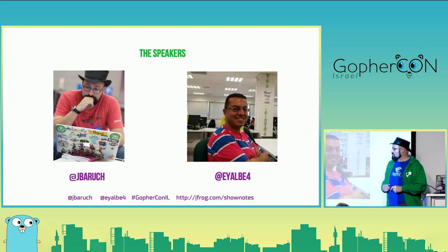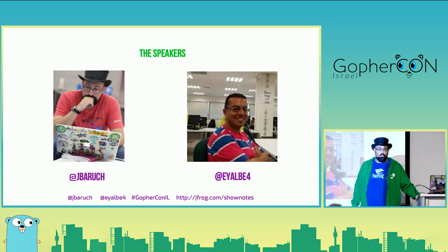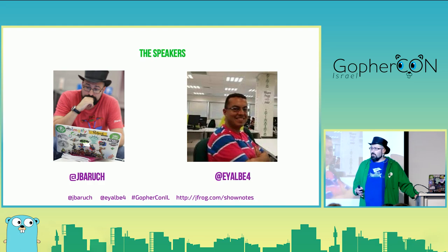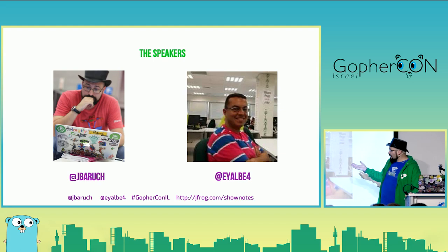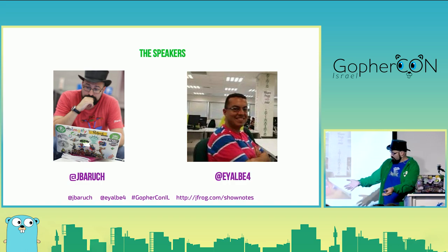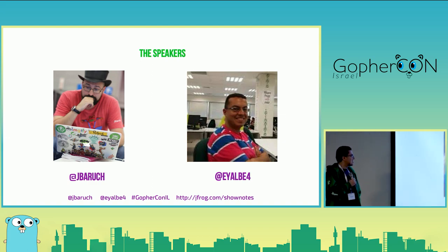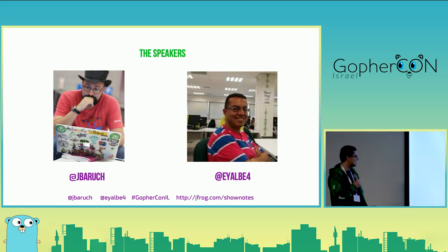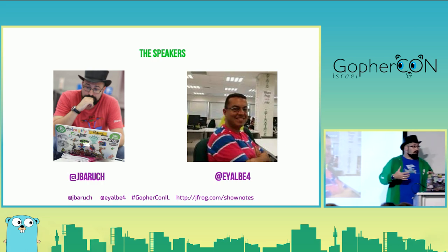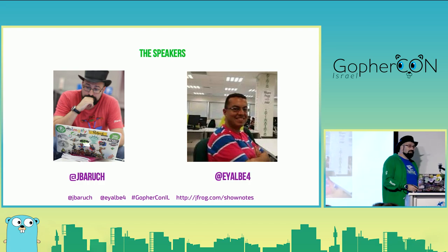Let's introduce the speakers. Yal Ben Moshe is the lead of our ecosystem team, which does a lot of work around the ecosystem for our products. One of the most important is JFrog CLI, which is actually written in Go and has been refactored to modules lately. Yal will share his experience doing that today. My name is Baruch, I'm head of developer relations with JFrog. Our Twitter handles are on every slide.